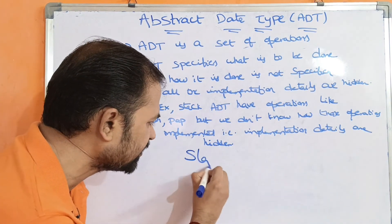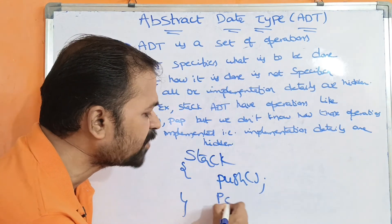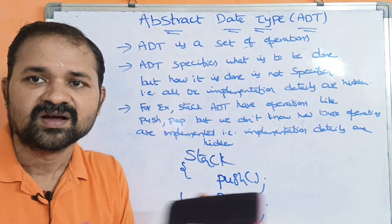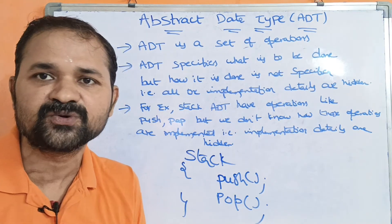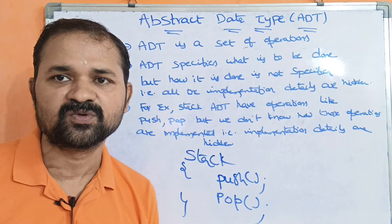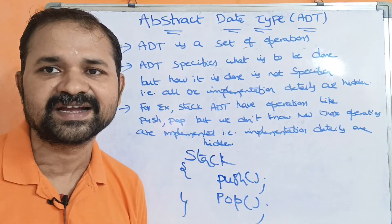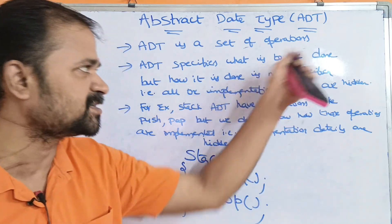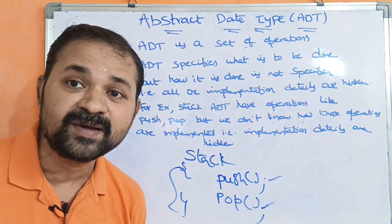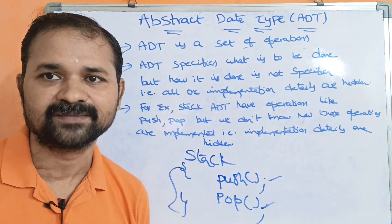Suppose we take a stack. Inside the stack, we declare and define the operations, and those are specified. But the user does not know how the push operation is implemented or how the pop operation is implemented — those details will be hidden and will not be given to the user. So this is what ADT is.